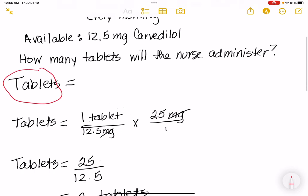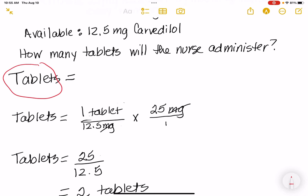So as you come down and you set up your problem you see tablets equals one tablet over 12.5 milligrams because that's what we have. And then you want to put your multiplication sign and you want to put 25 milligrams over one because that's what we have. Now in dimensional analysis what you're able to do is you're able to cross out your milligrams because you've got it in the numerator and the denominator of your problem. So you can get rid of that.